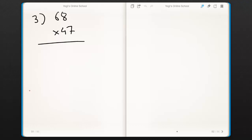Let's try this question together. So first we have to do upward multiplication of last digits. 8×7 is 56. So write 6 and take 5 as carry.